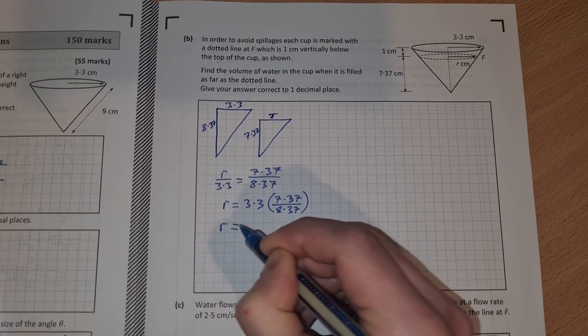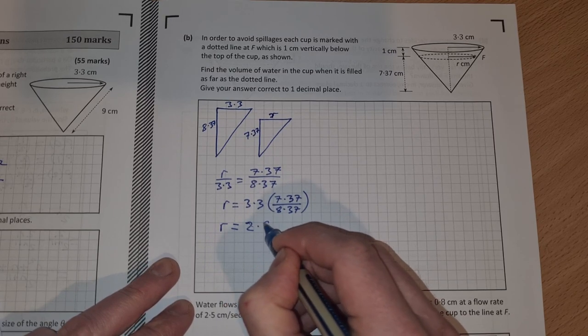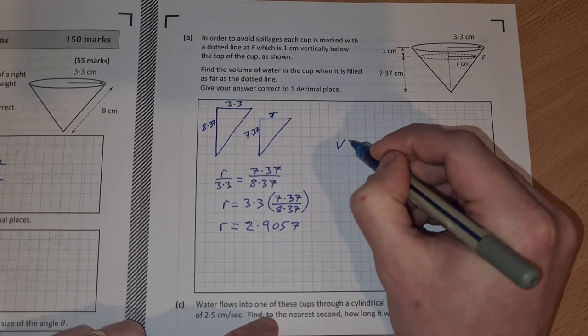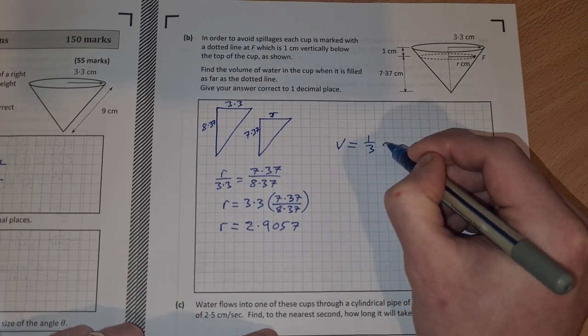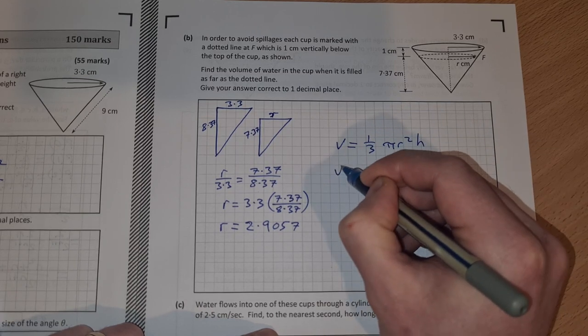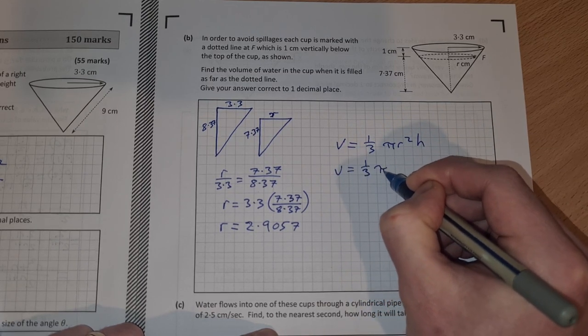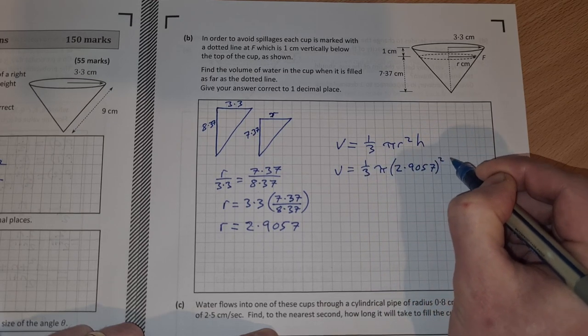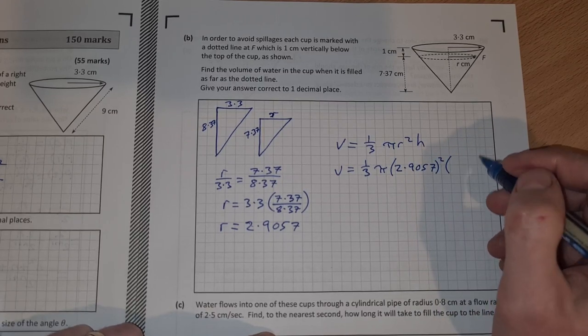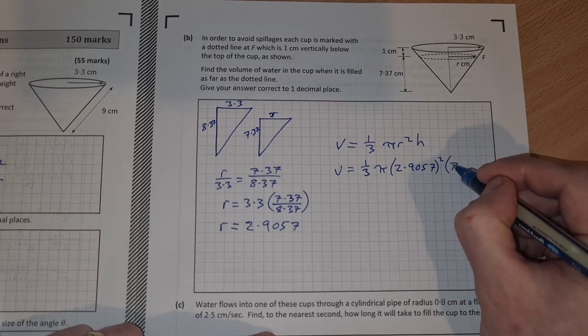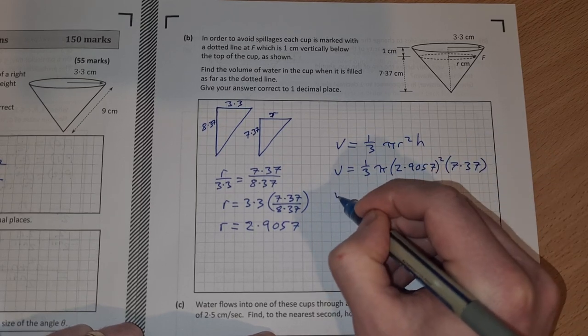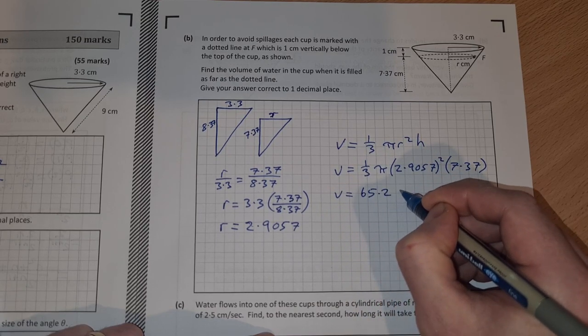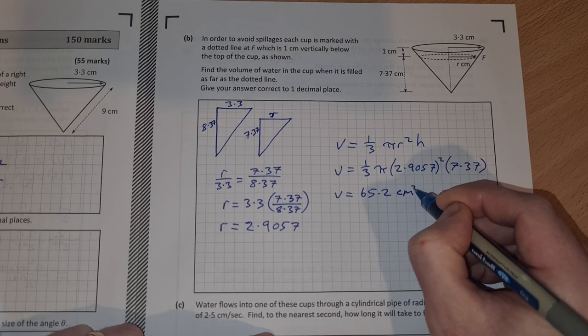Our new radius is 2.9057, so then the volume equals ⅓πr²h. So v equals ⅓π times r is 2.9057 squared and h or height was 7.37. Pop them into your calculator and you should get a volume of 65.2 and the units will be cubic centimeters.